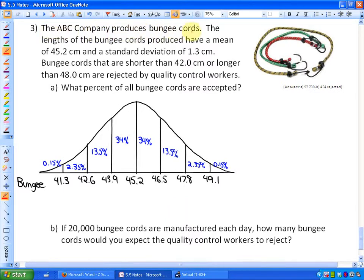It says, The ABC company produces bungee cords. The lengths of the bungee cords produced have a mean of 45.2 cm and a standard deviation of 1.3 cm. Bungee cords that are shorter than 42 cm or longer than 48 cm are rejected by quality control workers. And question A says, What percent of all bungee cords are accepted?